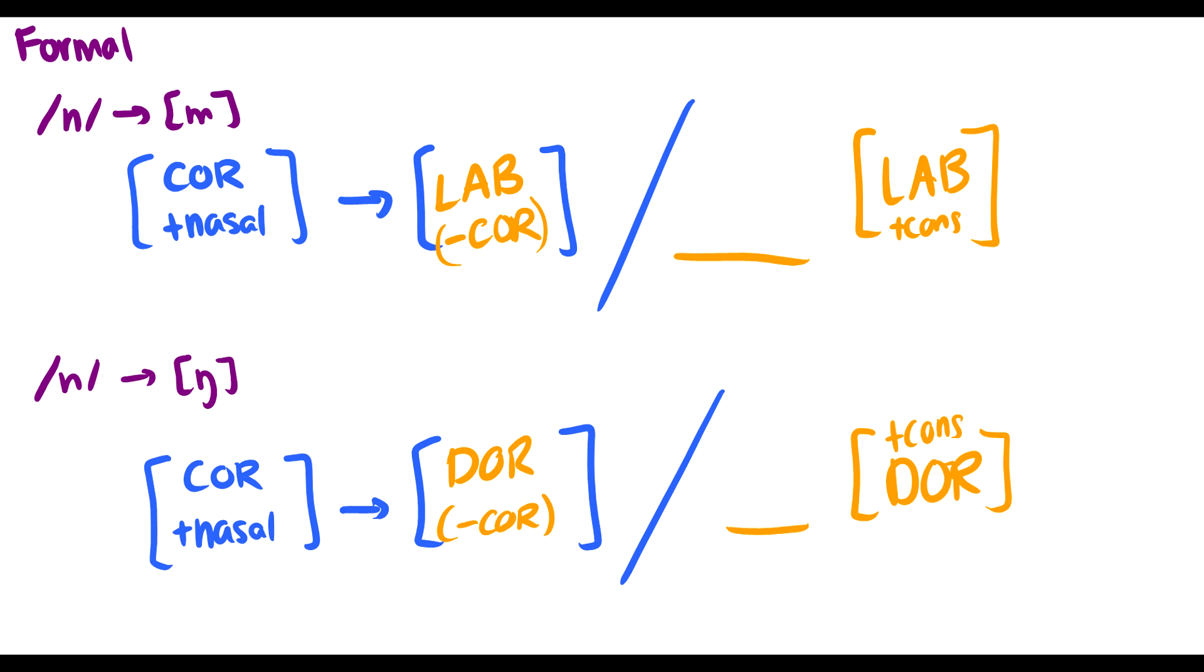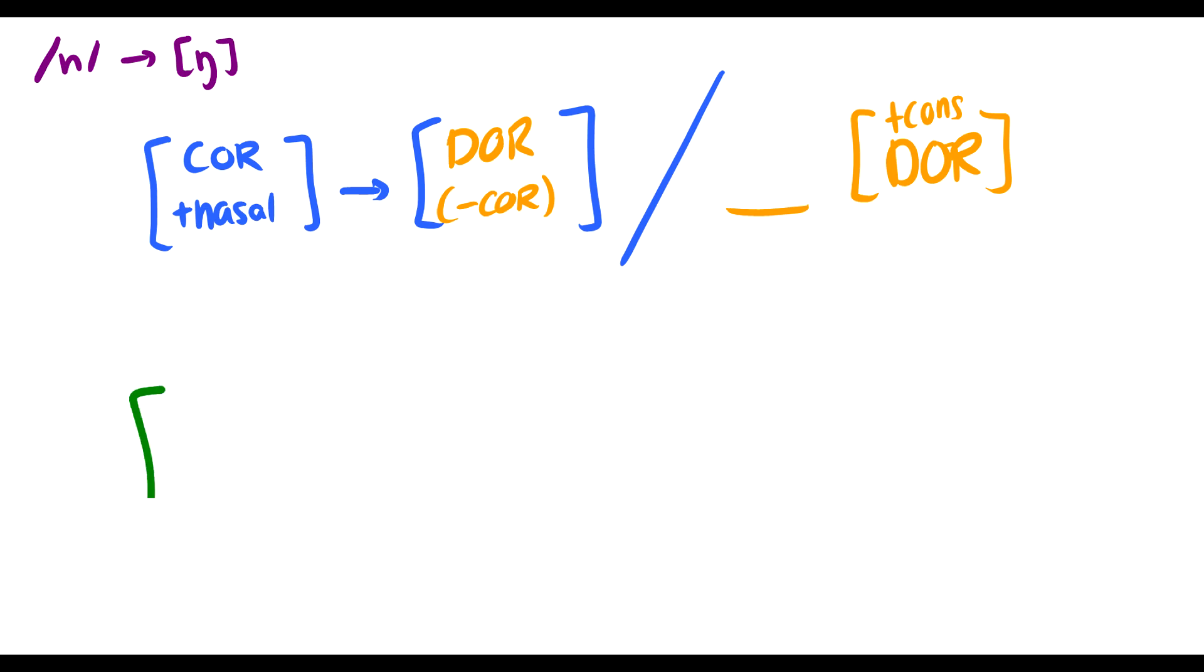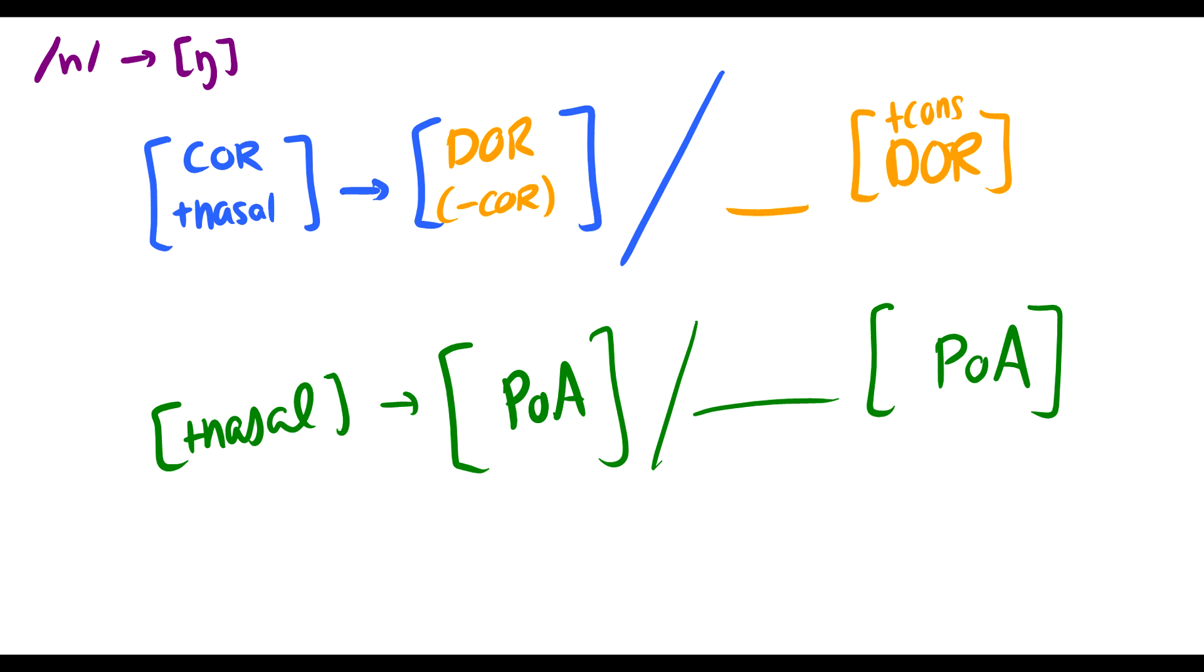And we're saying, hold on a second. Two rules for this one thing? This is assimilation. This is one process. Why do we have two rules? That's a good question. Why do we need two rules for one process? It looks like they're exactly the same thing. It's just we're changing our place of articulation. Why don't we have a general place of articulation rule? So here's the question. Why can't we say that this nasal becomes some place of articulation before the place of articulation?